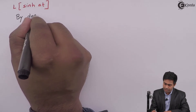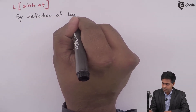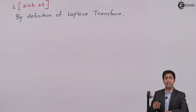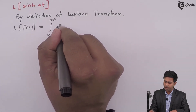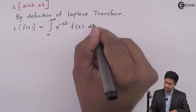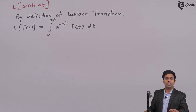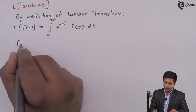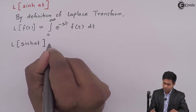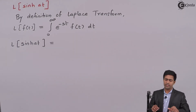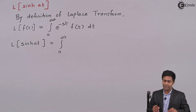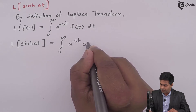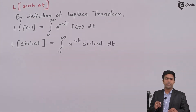By the definition of the Laplace transform, we have: L{f(t)} = integral from 0 to infinity of e^(-st) f(t) dt. Now, using this definition to find L{sinh(at)}, we compare sinh(at) with f(t), so f(t) = sinh(at). Substituting, we get the integral from 0 to infinity of e^(-st) sinh(at) dt.